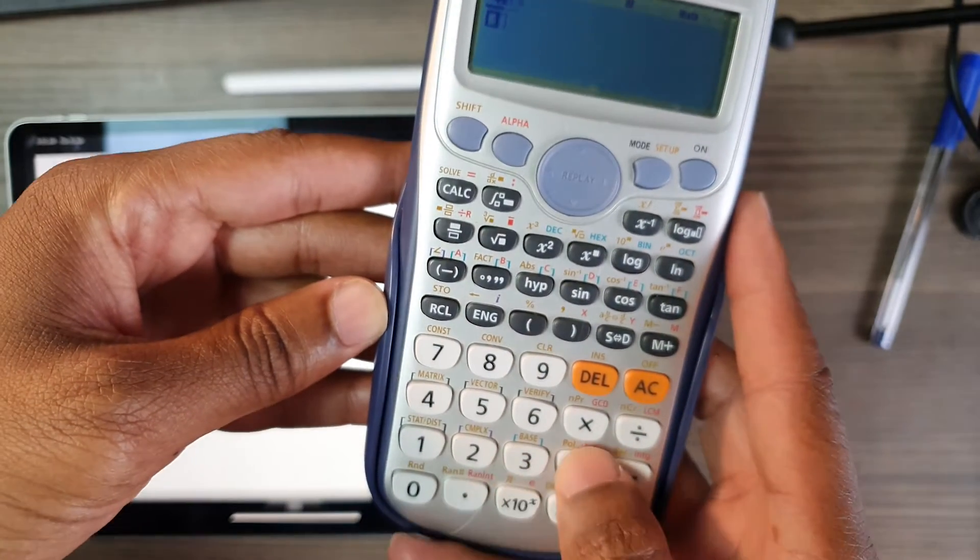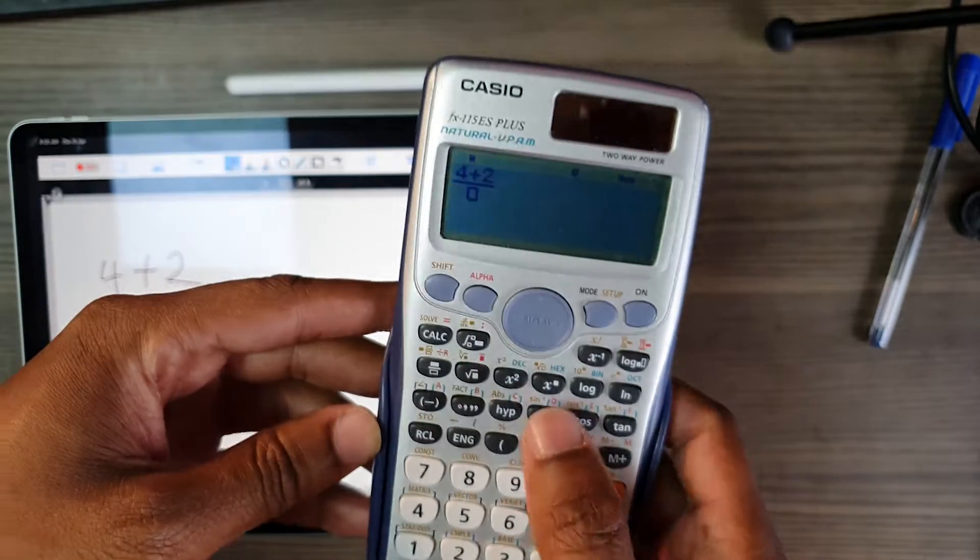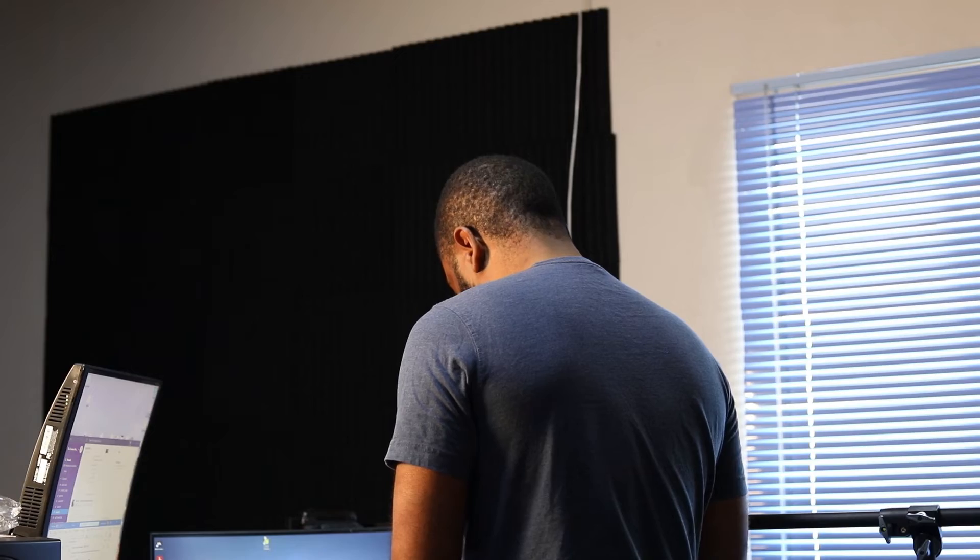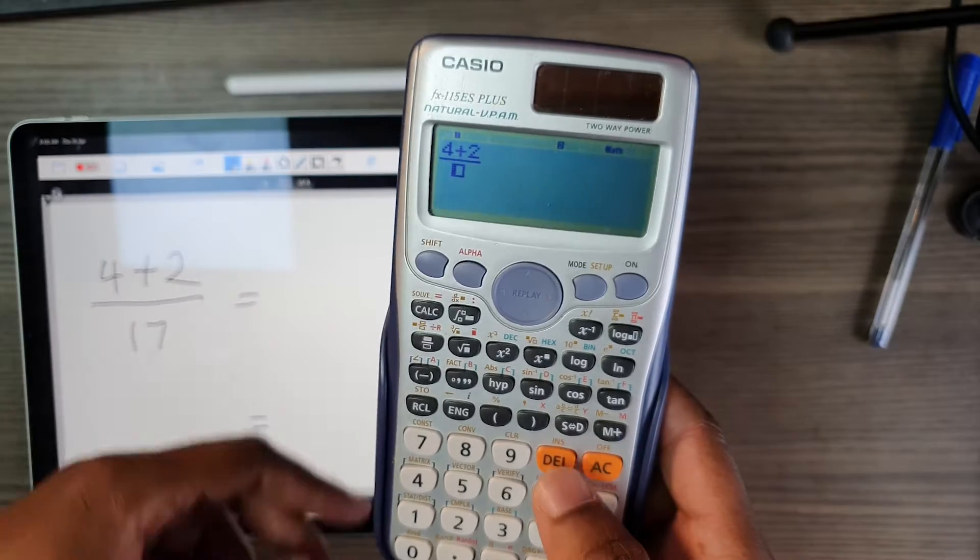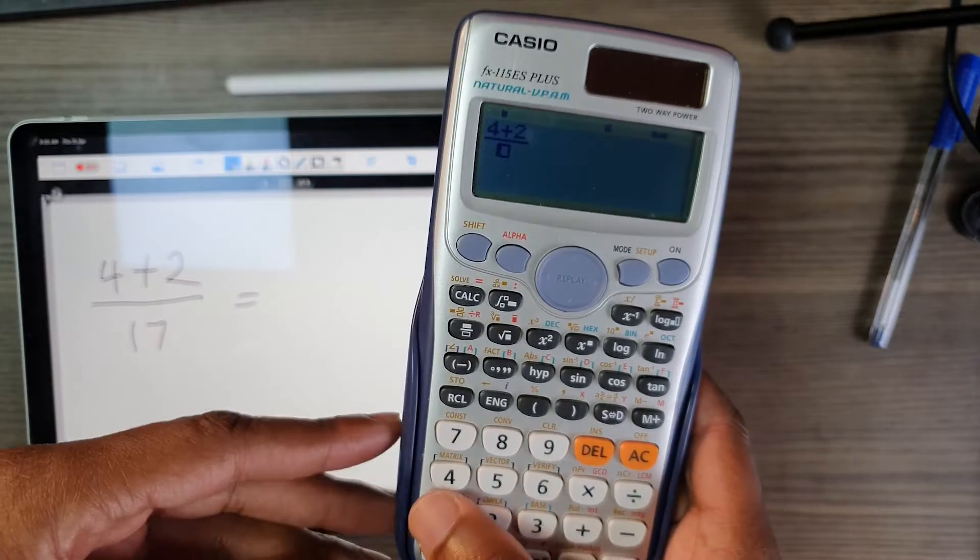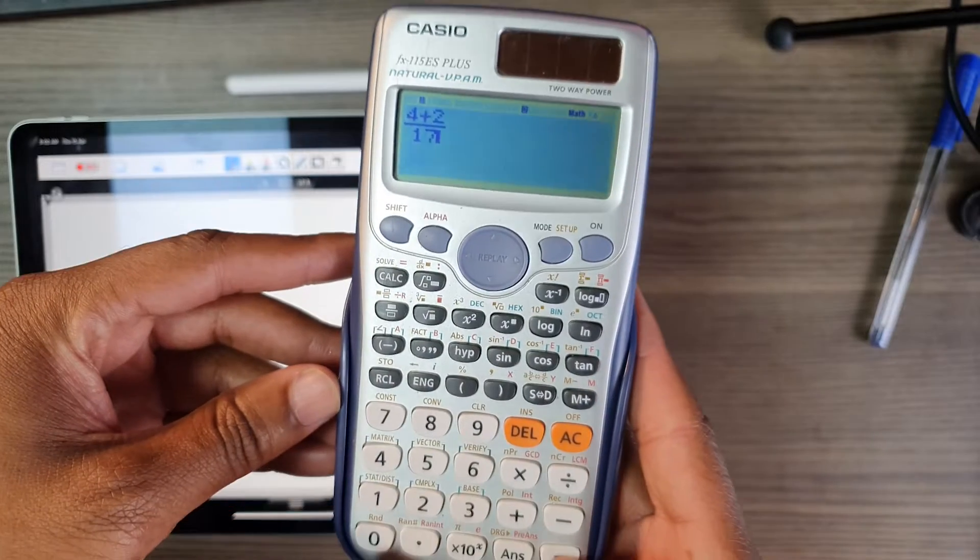It's 4 plus 2, and I'm going to use this circle thing, this setting, and press down and 1, 7, equals.